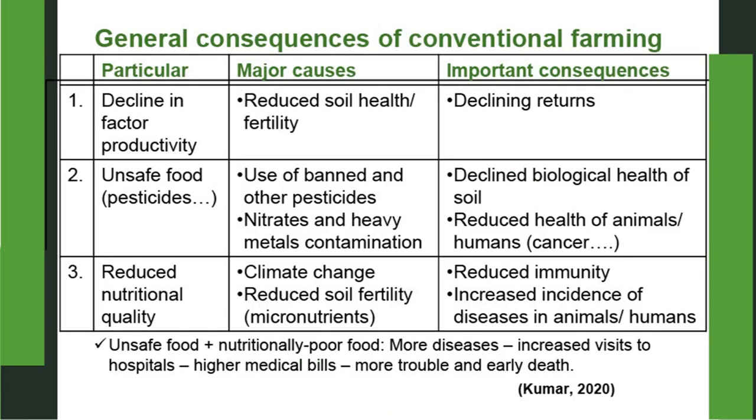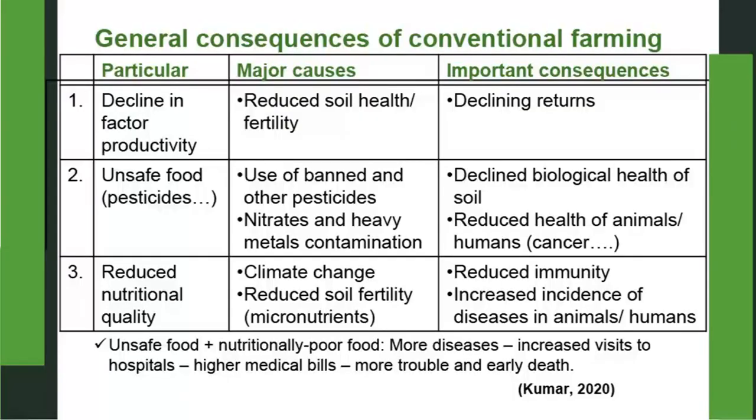Now, let us see the general consequences of conventional farming — why we need organic farming. First is decline in factor productivity. Factors of production are land, labour, capital and management. For example, 25 to 30 years ago, 1 kg of nitrogen used to give about 30 to 35 kg of rice grain. But now, 1 kg nitrogen gives hardly 15 to 25 kg. To get the same yield, you need to double the fertilizer rate — this is decline in factor productivity, caused by reduced soil health.